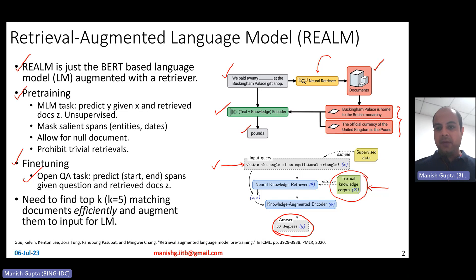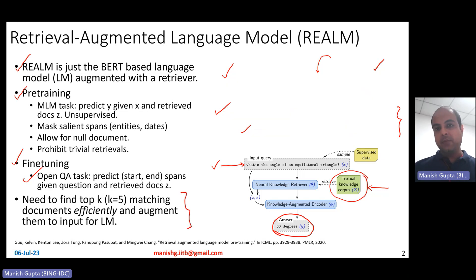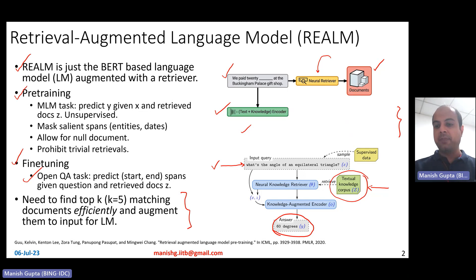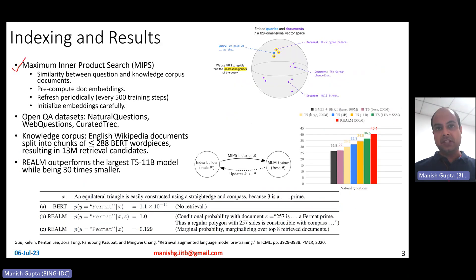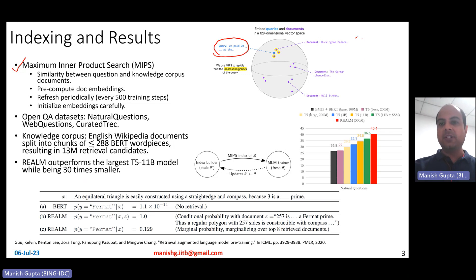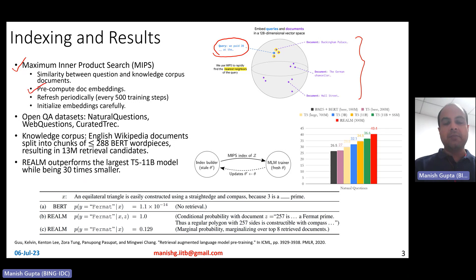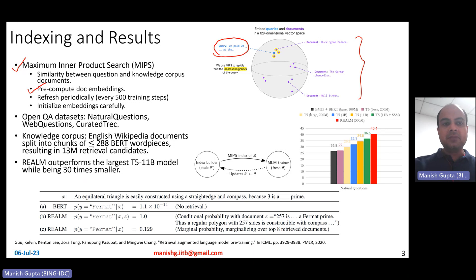If you want to retrieve the top K matching documents efficiently, even when your corpus may have millions of documents, that is done using what is called MIPS — Maximum Inner Product Search. The idea is that when a query comes in, for example 'we pay 20 [MASK],' you have already taken all the documents in the document collection and embedded them into an embedding space. You have pre-computed the document embeddings, and then when a query comes in, you embed it and figure out the nearest documents that match the embedding with that particular query. This is done efficiently using MIPS, which is an approximate nearest neighbor search algorithm.